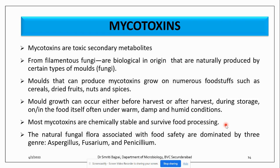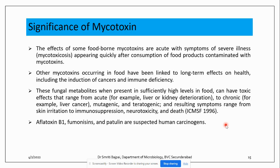Most mycotoxins are chemically stable and they can survive food processing. They are very stable — that is a very significant feature of mycotoxins. The natural fungal flora associated with food safety is dominated by three genera: Aspergillus, Fusarium and Penicillium. These are the three important genera which produce mycotoxins.